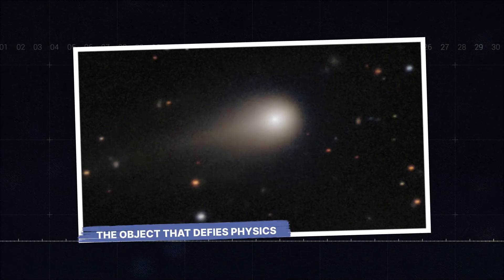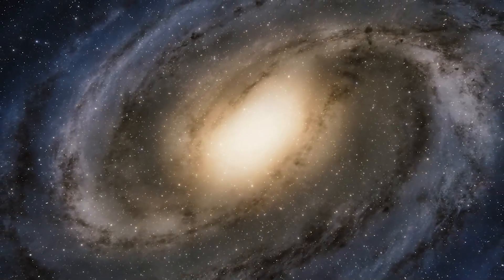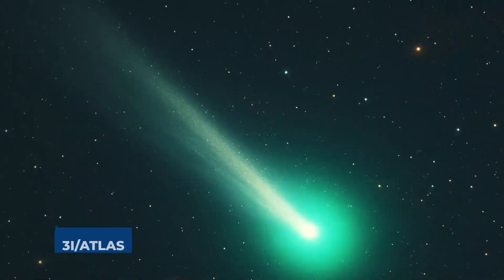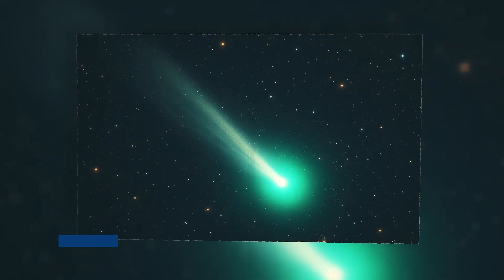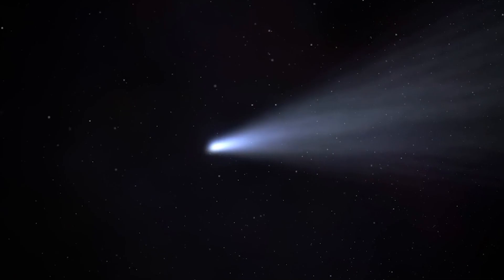The Object That Defies Physics. In the cold, silent theater of space, something is moving that shouldn't be. It's called 3I Atlas, the third interstellar object ever detected by humanity. But unlike the others, this one is different.